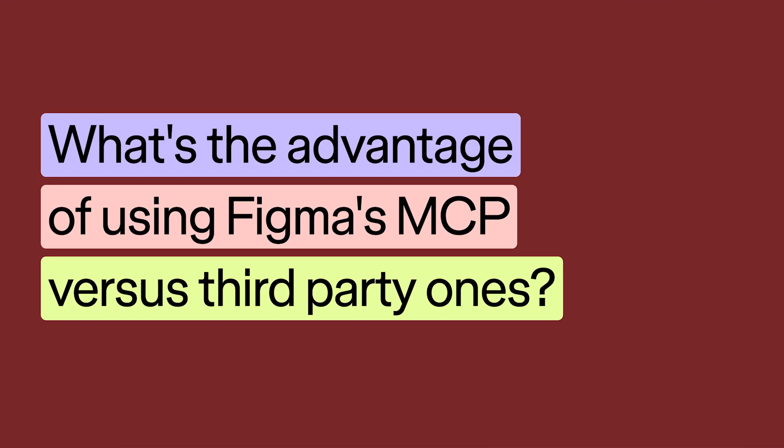What is the advantage of using Figma's MCP versus third-party ones? A lot of the third-party MCPs rely on Figma's REST APIs and plugin APIs, and those don't have access to the full context of Figma design. Our first-party MCP will be a secure way to get all this access, use your own agents, and also get additional tools, context, and metadata that doesn't currently get surfaced in the REST API — like code connect, variables across all plans, and annotations that we just showed.